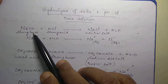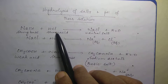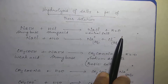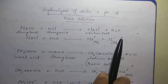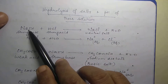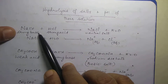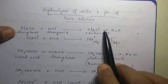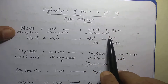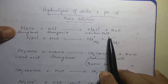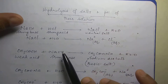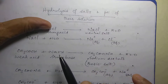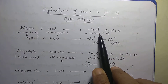NaOH plus HCl will give you NaCl plus water. This is a simple neutralization reaction. NaOH is a strong base, HCl is a strong acid, and the salt that is formed is a neutral salt. The salt formed from a strong base and a strong acid is a neutral salt.